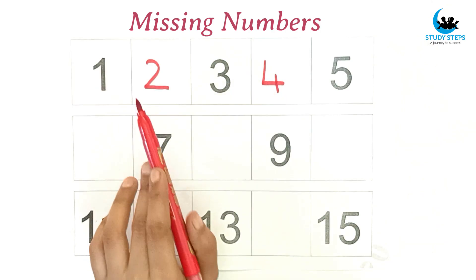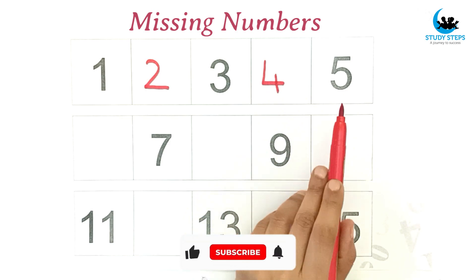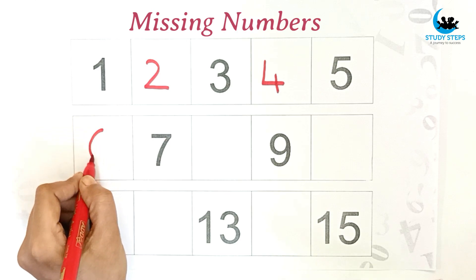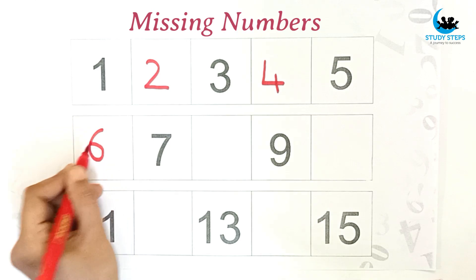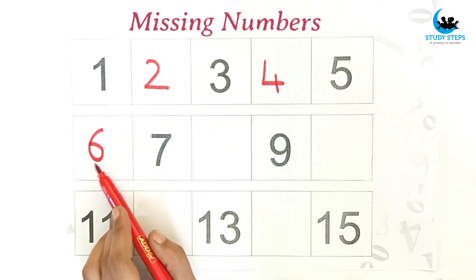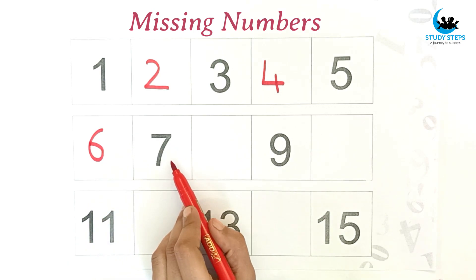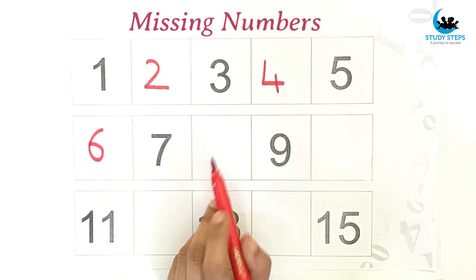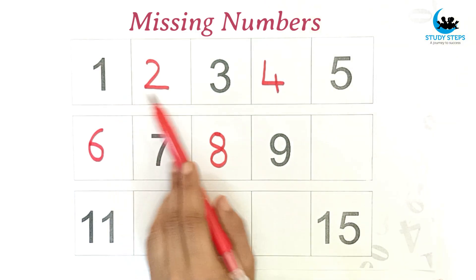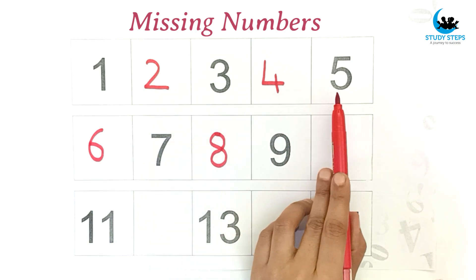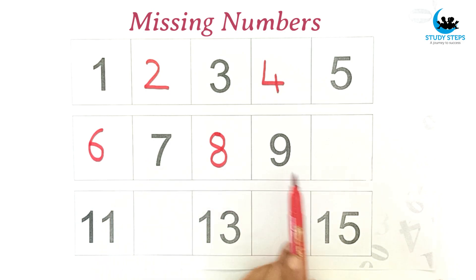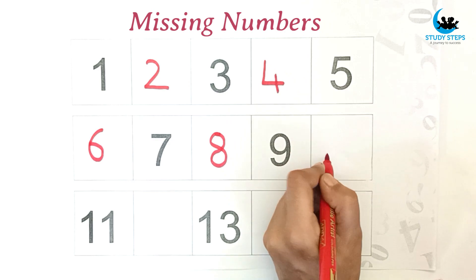One, two, three, four, five — which number comes after five? Six. One, two, three, four, five, six, seven, eight. One, two, three, four, five, six, seven, eight, nine — which number comes after nine? Ten.